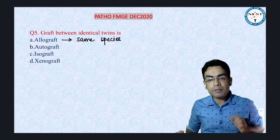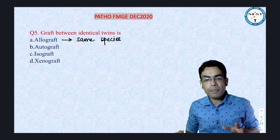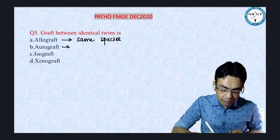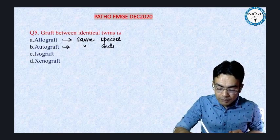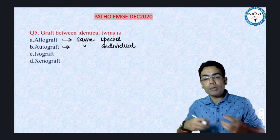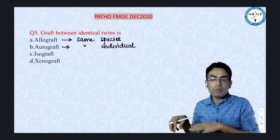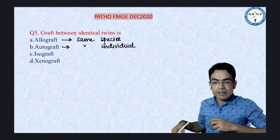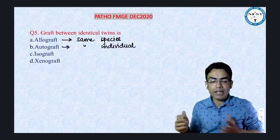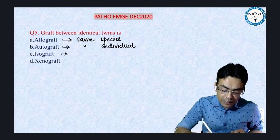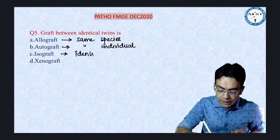So humans to humans — that is allograft. Autograft means same individual. For example, taking a graft from one part of your body and putting it into your thighs — same individual. If you are doing that kind of graft, isograft is between identical twins.